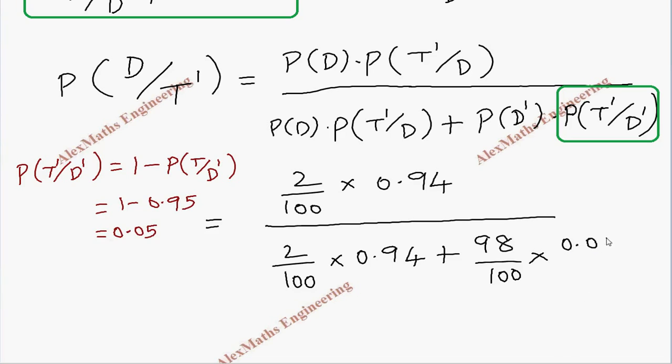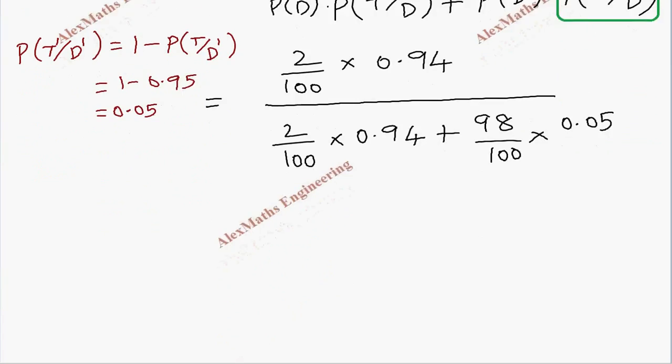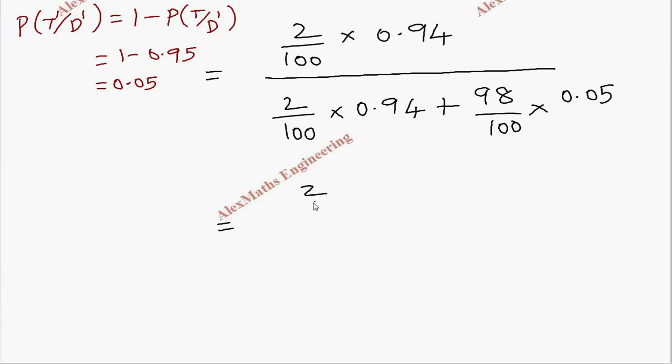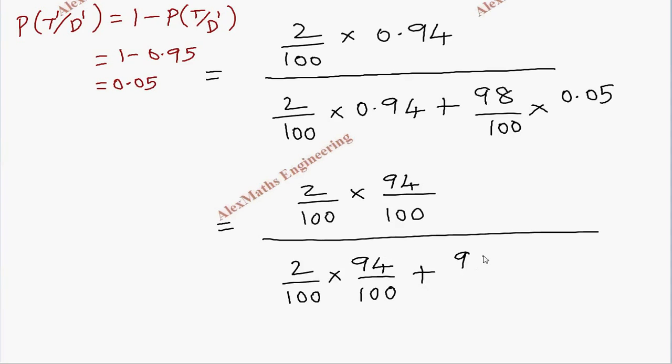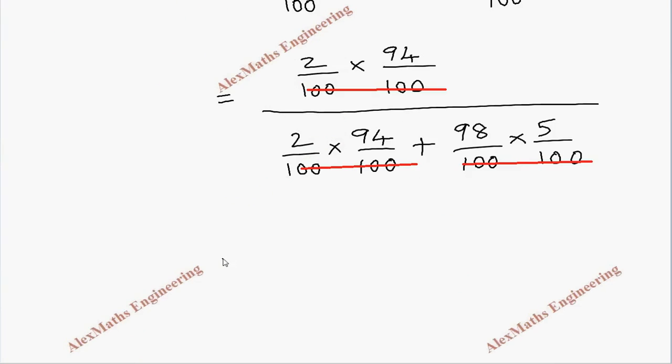So here it will be 0.05. To make the calculations easier, we write this as 2 by 100 into 94 by 100, whole division 2 by 100 into 94 by 100 plus 98 by 100 into 5 by 100. So now we can cancel the common denominators in all the terms, and from the rest of the terms, the product of the numerator...